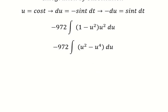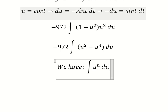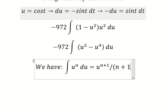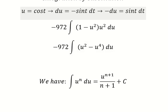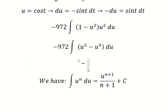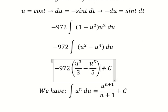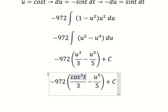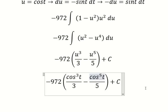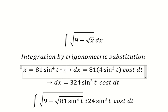Now we have u² multiplied by the expression, and we apply the power rule formula. For the u² term, two plus one gives us three. For the u⁴ term, four plus one gives us five. Then back-substituting, u equals cos(t). For t, we divide both sides by 81 to find t as the inverse cosine of this expression.